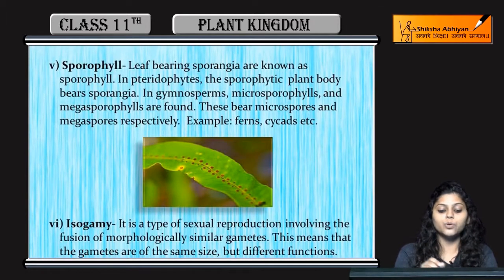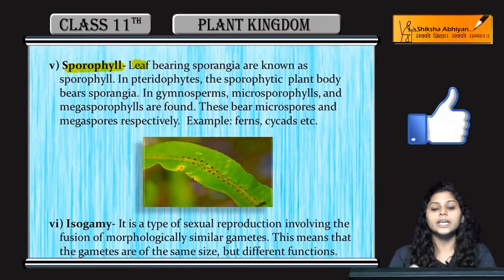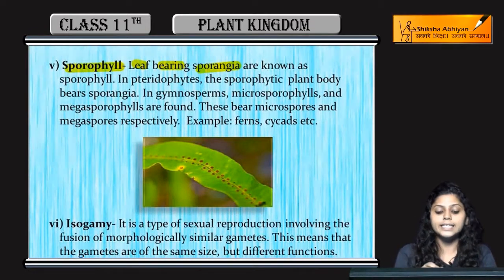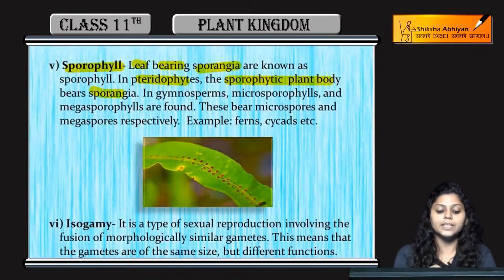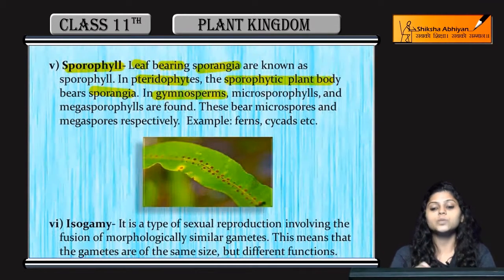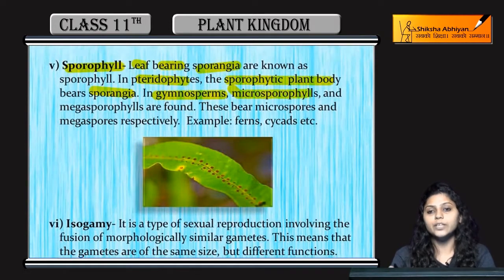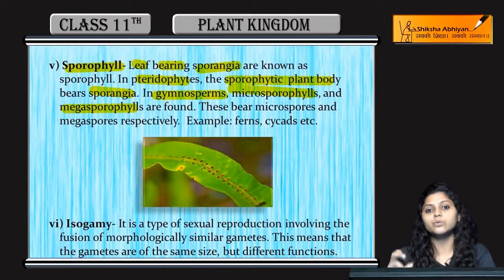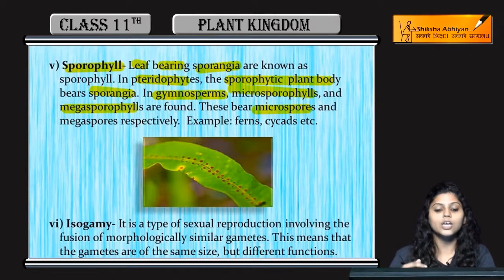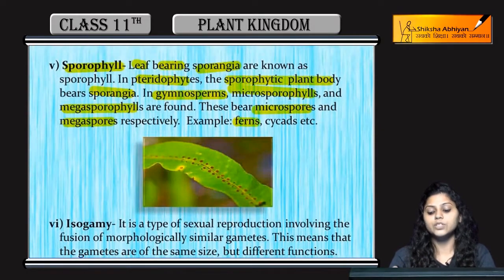Next, sporophylls. Sporophylls are leaves that bear sporangia. Examples are found in pteridophytes, which have a sporophytic plant body that bears sporangia. In gymnosperms, there are micro sporophylls and mega sporophylls — micro means small and mega means large, referring to the sizes of the gametes they produce. Micro sporophylls bear micro spores and mega sporophylls bear mega spores.